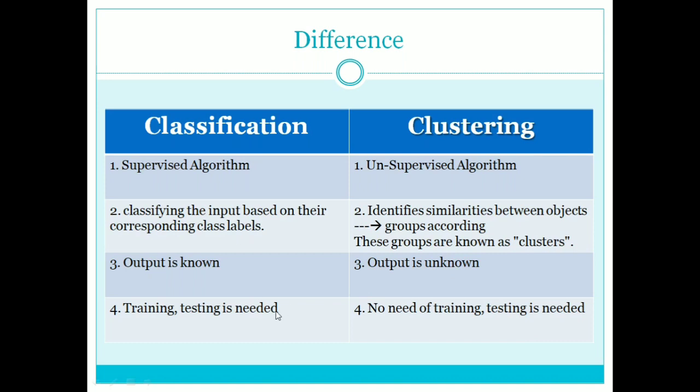In classification, training and testing is needed because we already have a predefined output — we train the model on training data and then test it. In clustering, training and testing is not needed because we take the input, group it into different clusters, and provide those clusters as the output.